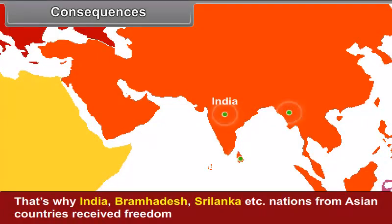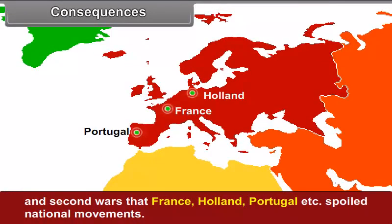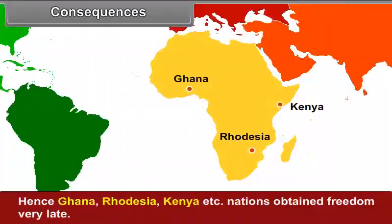That is why India, Burma, Sri Lanka and other nations from Asian countries received freedom. And the second reaction was that France, Holland, Portugal, etc., suppressed national movements. Hence, Ghana, Rhodesia, Kenya and other nations obtained freedom very late.